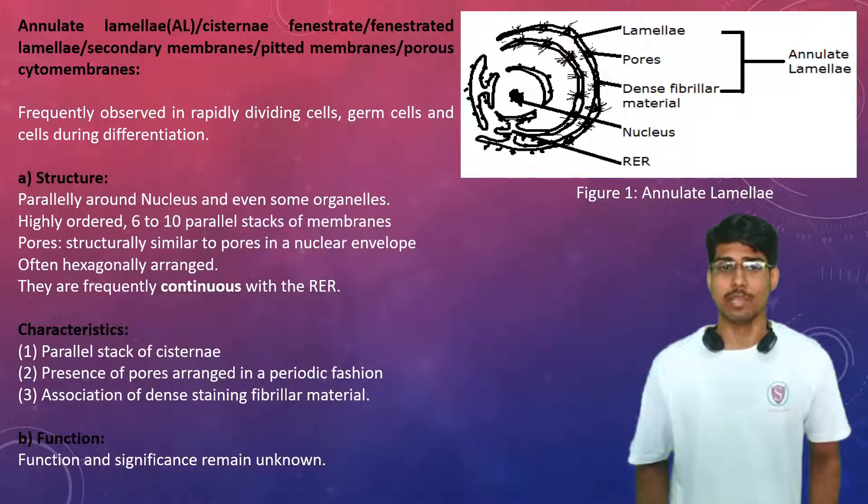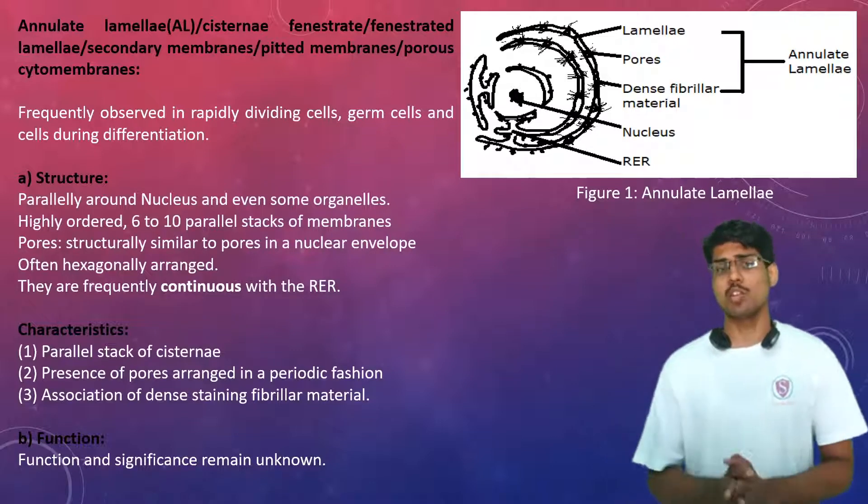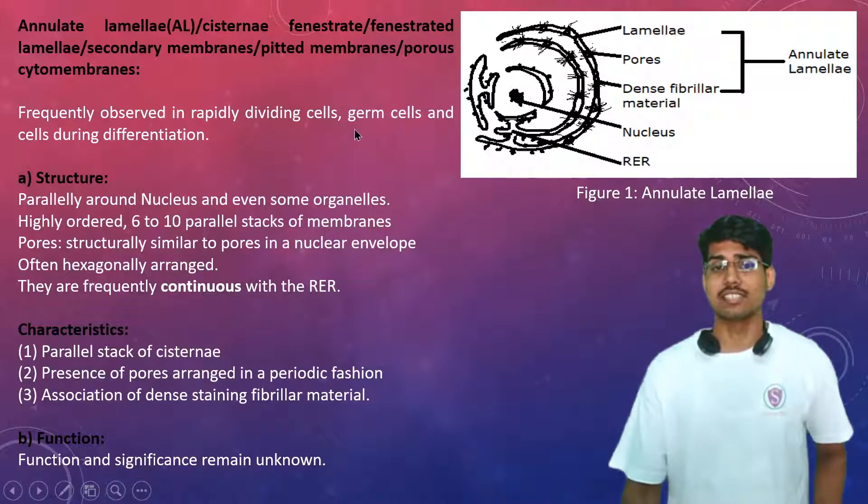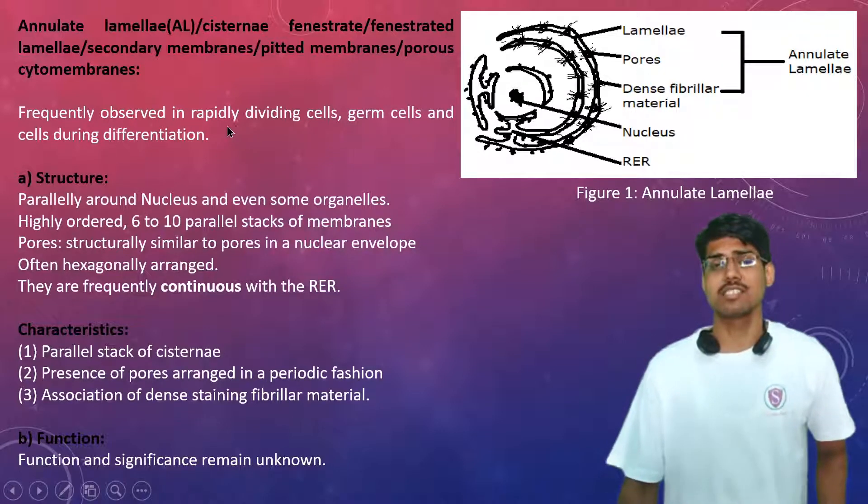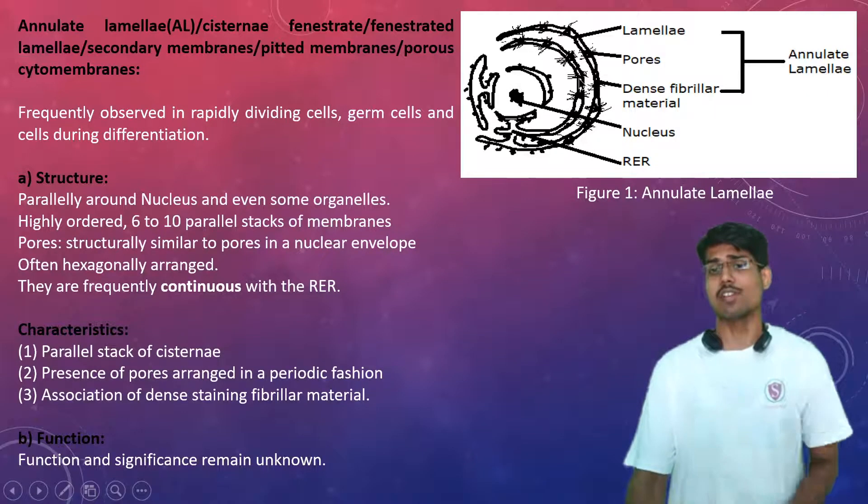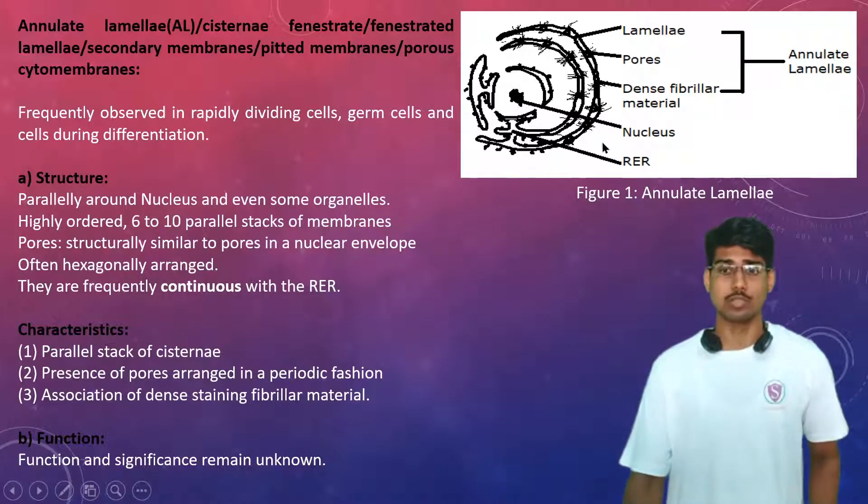These are frequently observed in rapidly dividing cells like germ cells, cells during differentiation, and cancerous tumor cells. So all of these annulate lamellas are observed in those cells only.